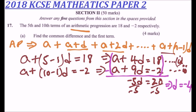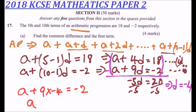Now that we have d equals minus 4, we can use either equation to find a. Using equation 2: a plus 9 multiplied by minus 4 equals minus 2. So a plus negative 36 equals minus 2. Taking minus 36 to the other side, a equals minus 2 plus 36, which gives a equals 34.